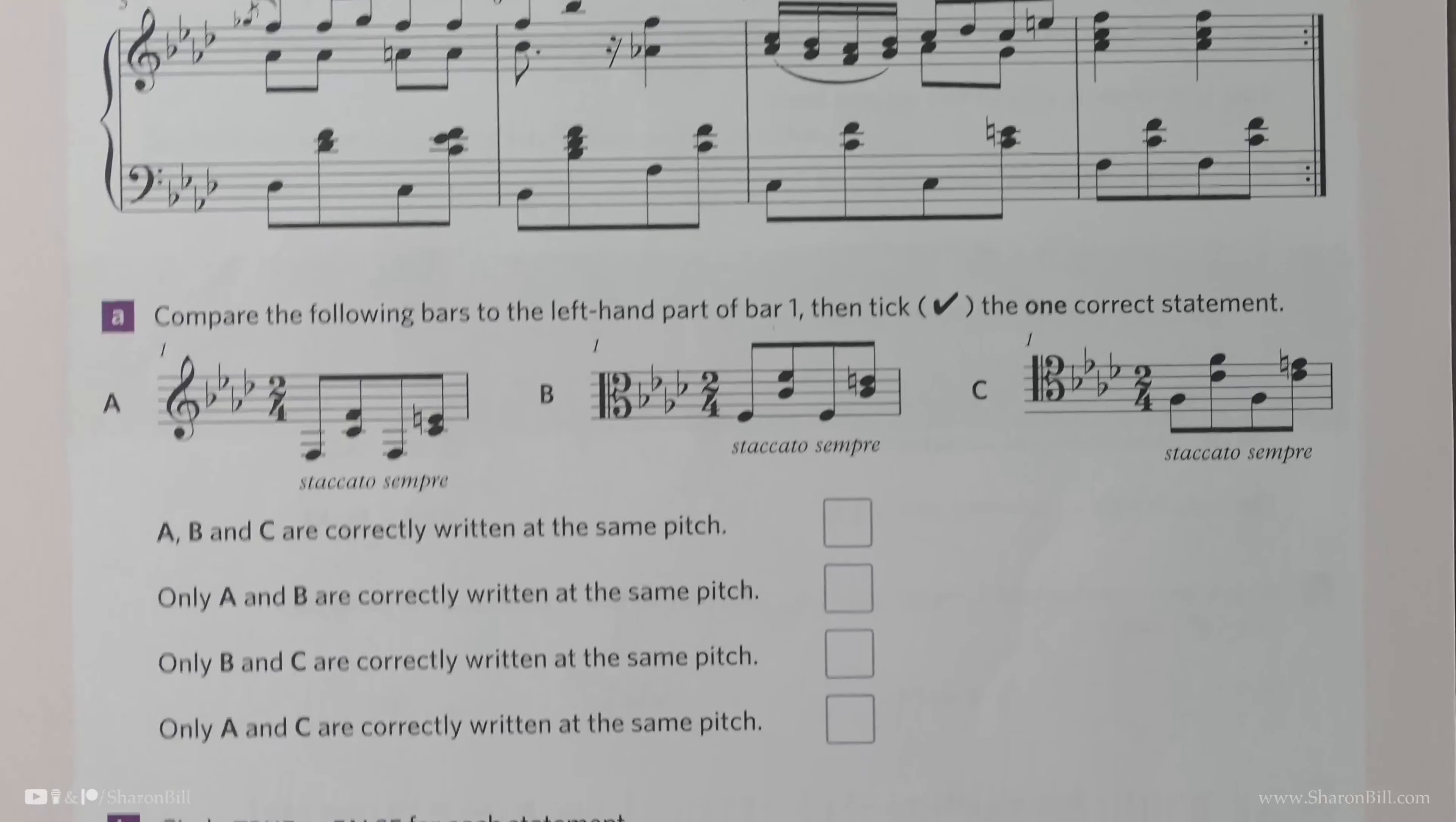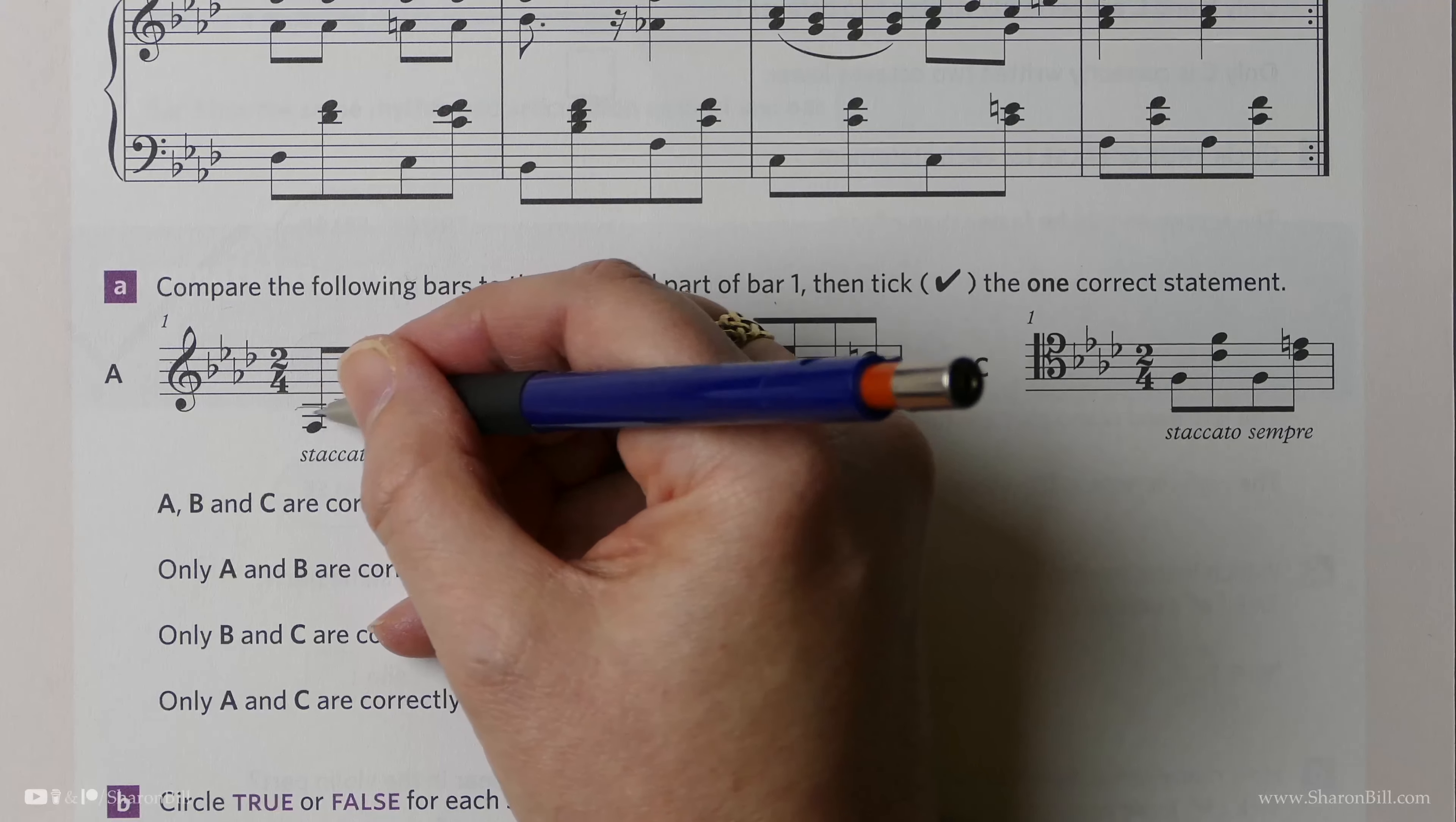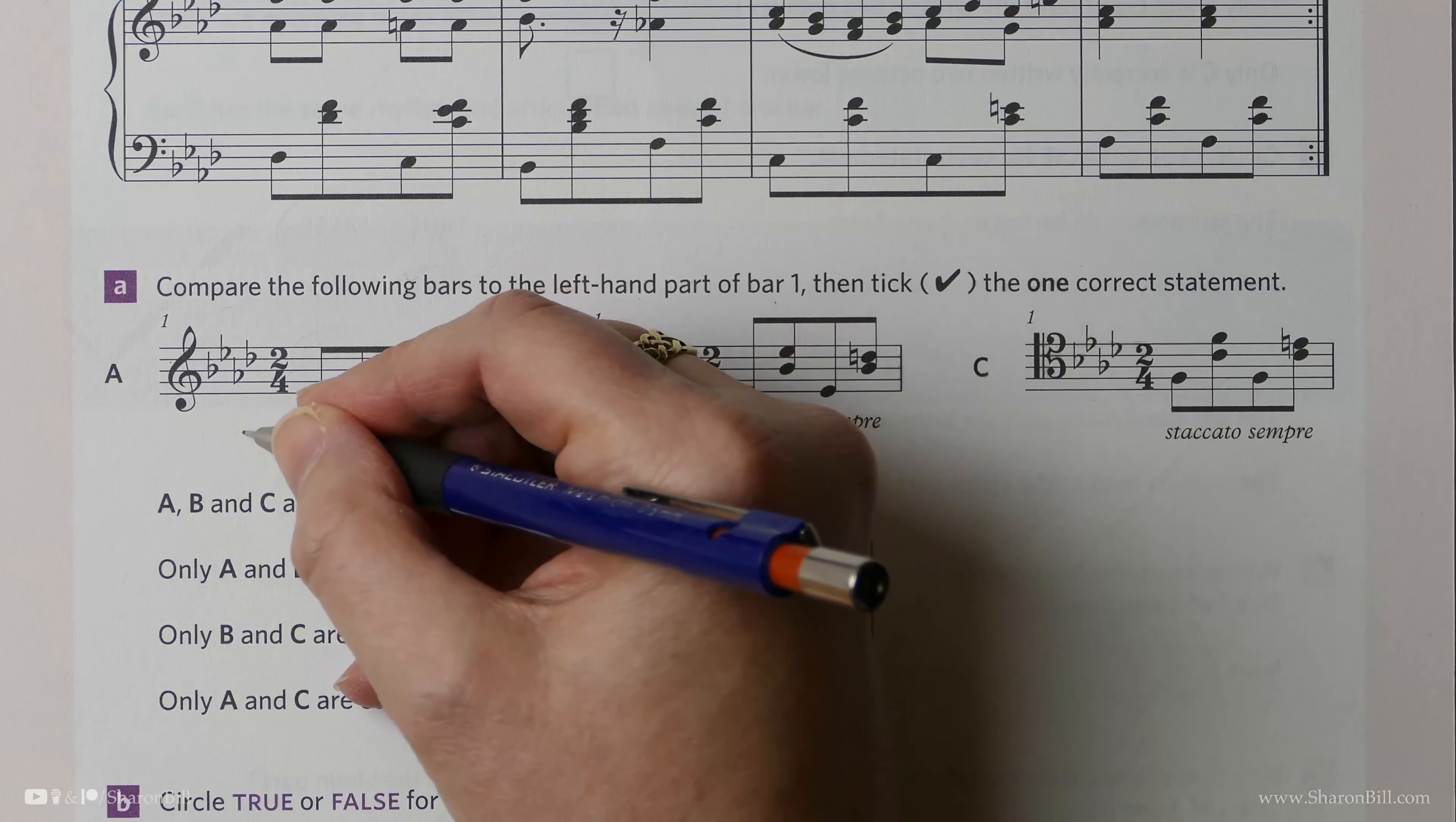Let's look at extract A. Here is middle C in the treble clef: C, B, A, G, F. There's middle C. So that is exactly correct.